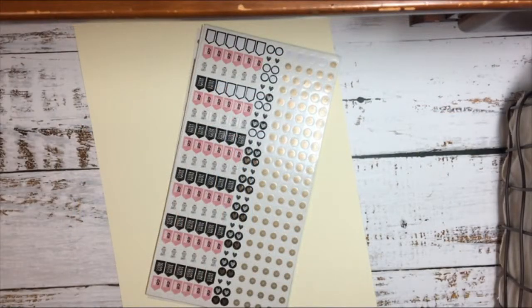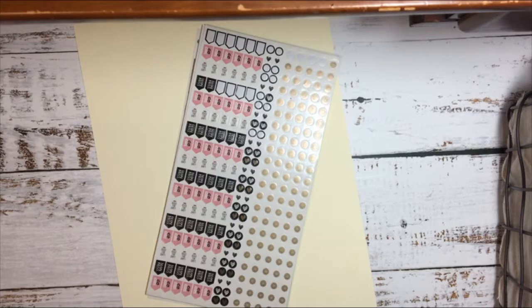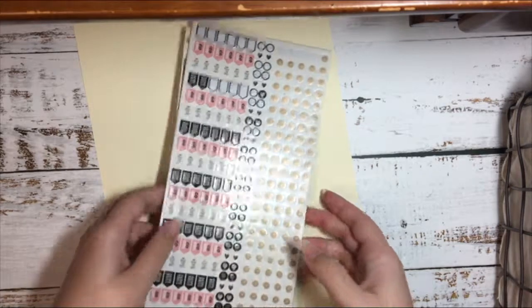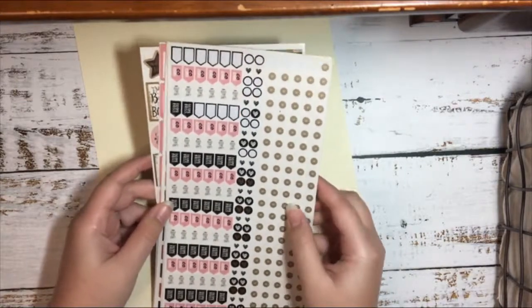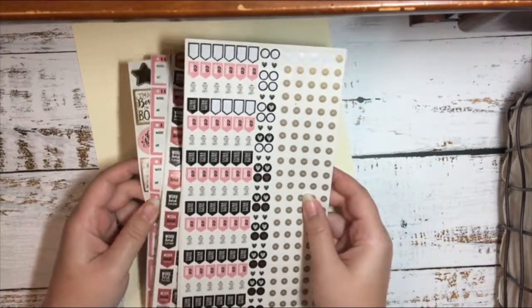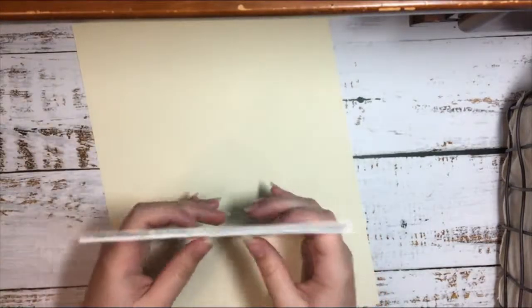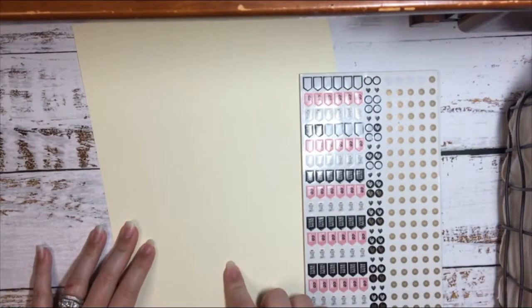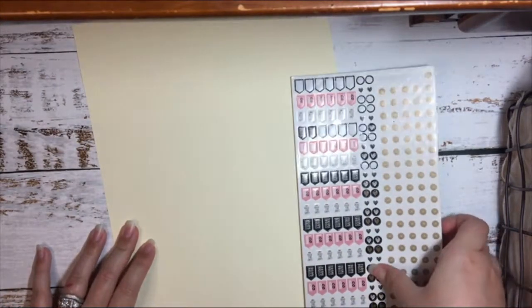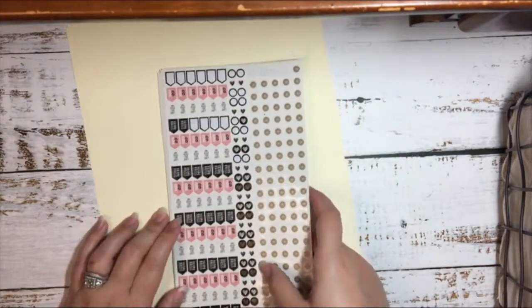Hello everyone and welcome back to my channel. Today I'm going to be showing you how to make a DIY sticker book with your happy planner products. I have 10 sticker sheets right here that came with my planner in the pack that I got for Christmas, and I also have some cardstock.